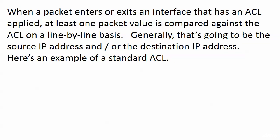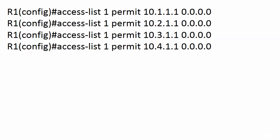I'm going to show you a standard ACL in a moment. If you've never seen one or don't know what a standard ACL is, don't sweat it. When a packet enters or exits an interface that has an ACL applied, at least one value on that packet is compared against the ACL on a line-by-line basis. Generally speaking, it's going to be the source IP address, the destination IP address, or both.